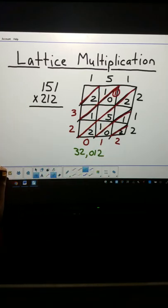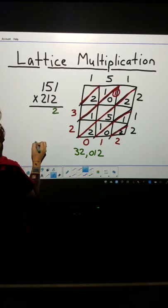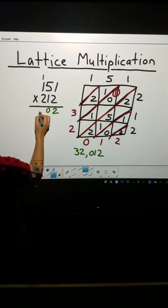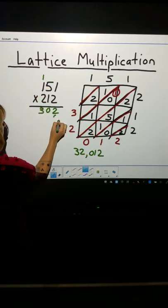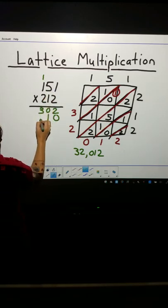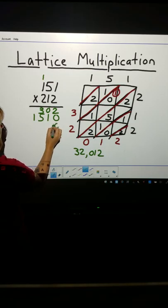Let's multiply the old-fashioned way and see if we get the same product. 1 times 2 is 2. 2 times 5 is 10. Regroup. 1 times 2 is 2, plus 1 is 3. Hold one spot. 1 times 1 is 1. 1 times 5 is 5. 1 times 1 is 1. Hold two spots.